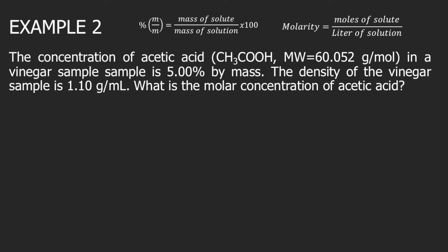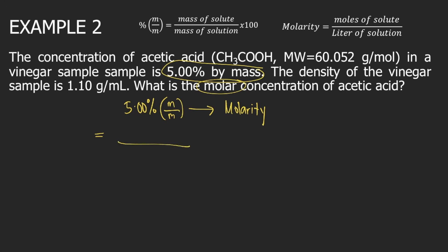For example two, the concentration of acetic acid in a vinegar sample is 5 percent by mass. The density of the vinegar sample is 1.10 grams per mL. What is the molar concentration of acetic acid? We are given 5 percent by mass and will convert this to molarity. Since percent means per 100 grams of solution, 5 percent by mass means that for every 100 grams of solution, it contains 5.00 grams of acetic acid.